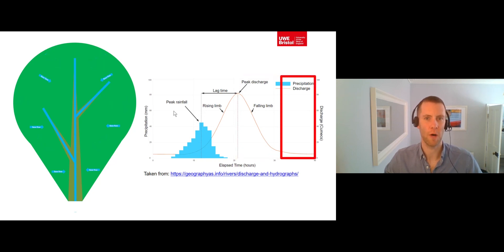Once all of the storm flow from overland flow and through flow has drained away, the discharge returns back down to its base flow level, as it is only being supplied by groundwater flow that comes from the hill slope bedrock.